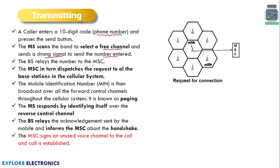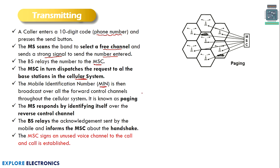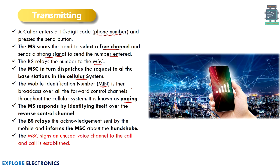The base station is connected to an MSC — that is, a Mobile Switching Center. The base station sends the number to the MSC, and the MSC starts dispatching that number throughout the base stations in the cellular system, because the MSC does not know where person B actually is. The mobile identification number of person B is broadcasted over the forward control channels — this forward control channel communication is called paging. Person B's mobile phone keeps on accepting the paging information.